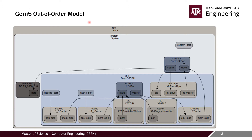GEM5 uses simulation objects to instantiate the different modules or sections that are part of an out-of-order processor. This is the abstract diagram of how a processor is modeled. The O3CPU is basically a class in GEM5 which has all the components of an out-of-order processor. We also have instruction and data caches at the L1 level and an L2 level cache — essentially an out-of-order processor with a two-level cache hierarchy.